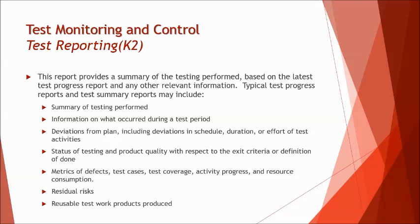Some of the key elements of the test summary report include: a summary of testing performed, information on what occurred during the test period, deviations from the plan and the control actions taken, status of testing and product quality with respect to exit criteria or definition of done, metrics evaluated to measure effort, residual risks identified but not triggered during testing along with suggested contingency plans, and reusable test work products produced for future use or the maintenance testing team.